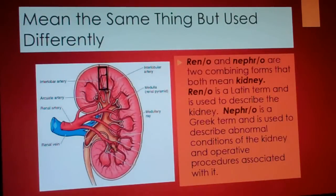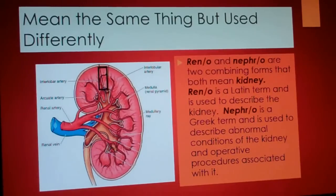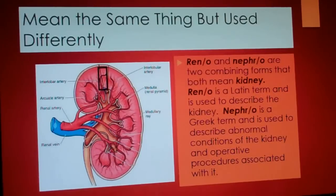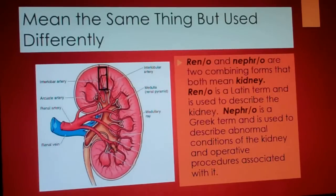Reno and nephro are two combining forms that both mean kidney, but used differently. Reno is a Latin term used to describe the kidney. Nephro is a Greek term used to describe abnormal conditions of the kidney and operative procedures associated with it.